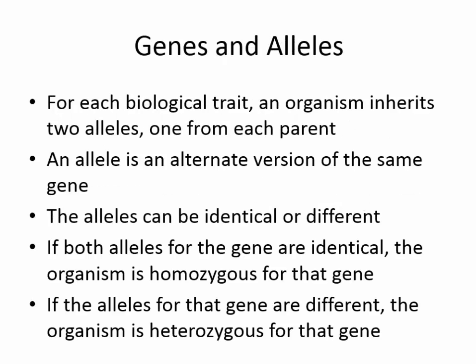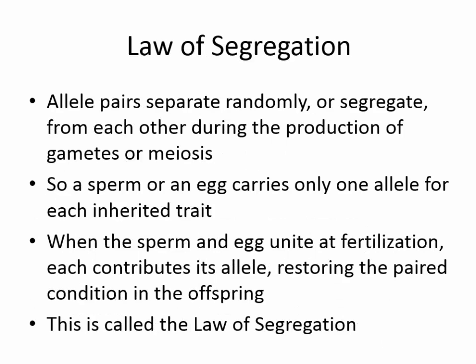For each biological trait, an organism inherits two alleles, one from each parent. This is what we know now — he didn't know that; he sort of suspected it, but there was no technology at that time for him to confirm his suspicions. An allele is defined as an alternate version of the same gene. The alleles can be identical or they can be different. If both alleles for the gene are identical, the organism is said to be homozygous for that gene. If the alleles are different, the organism is said to be heterozygous.